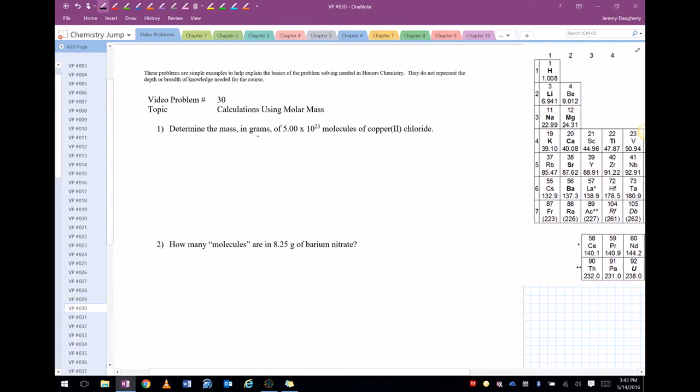Determine the mass in grams of 5 times 10 to the 23rd molecules of copper 2 chloride. So first let's figure out what copper 2 chloride is, because I think I'm going to need it. Copper has a charge of plus 2, that's what the 2 tells me. Chloride is negative 1, so the formula ends up being CuCl2.